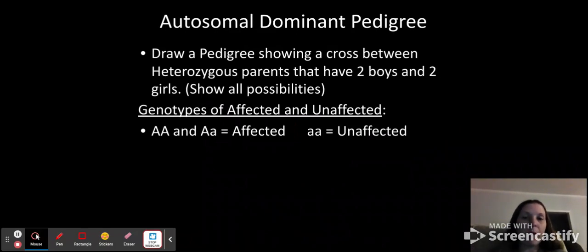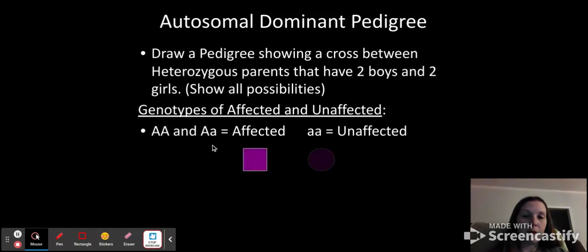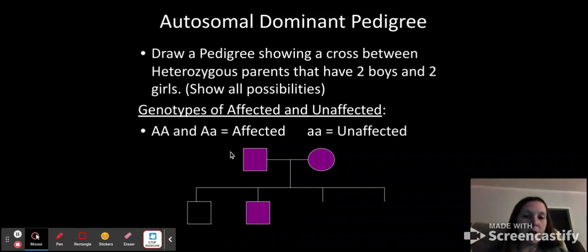Autosomal dominant pedigrees. So we would draw pedigrees showing a cross between heterozygous parents that have 2 boys and 2 girls. Show all the possibilities. We've got the genotypes of the affected and the unaffected. So affected, since this is dominant, would be anything with a capital letter. Only lowercase letters are not affected. And these are heterozygous parents, which means they are both affected because they would be capital A, lowercase a. You draw a line between them down to their four offspring. Since they're both heterozygous, you would have three that are affected, but you would have 25% that would not be affected. And we just showed that it was the boy there for this one.